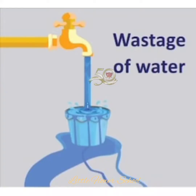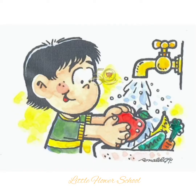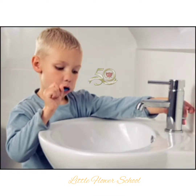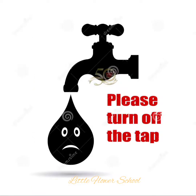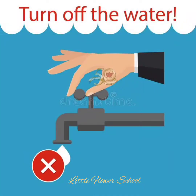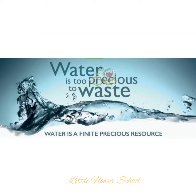Never allow water to overflow from buckets. Wash fruits and vegetables in a bowl of water and not under the running tap water. Always close the taps while brushing your teeth. Use leftover water in your water bottle to water a potted plant. Turn off the tap after each use. Use a sprinkler to water the garden. By following these methods, we can prevent the wastage of water. Water is very precious, so we must save it.